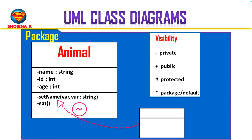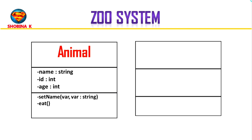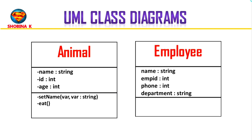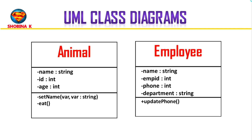Let's see these basics with another example. I'll make a class for employee. We could give an employee attributes like name, employee id, phone number, and department. We want all these attributes to be private. Then we could create a simple method like updating the phone number, and it is set to public.